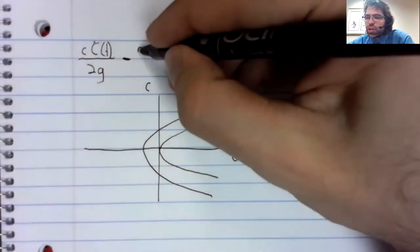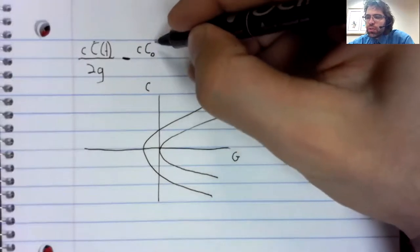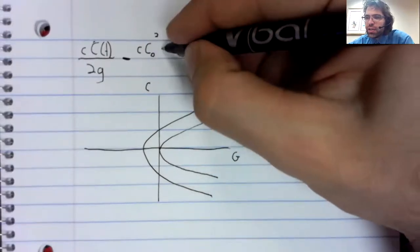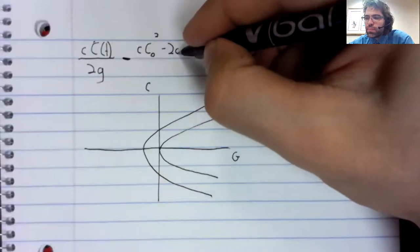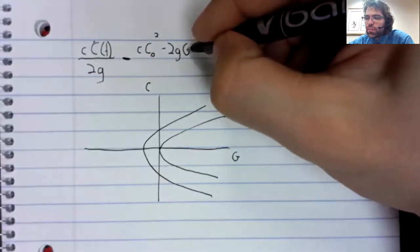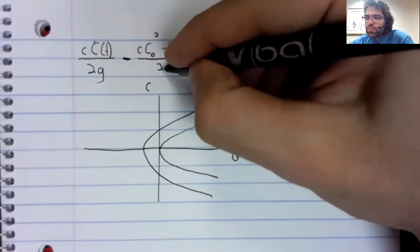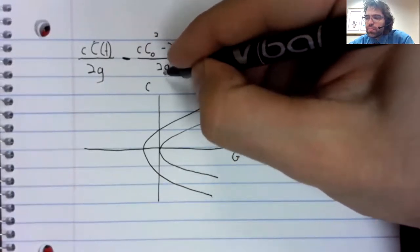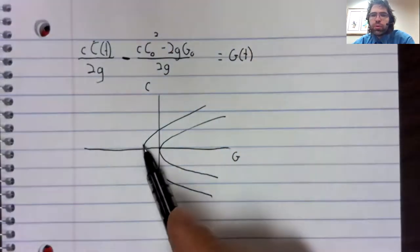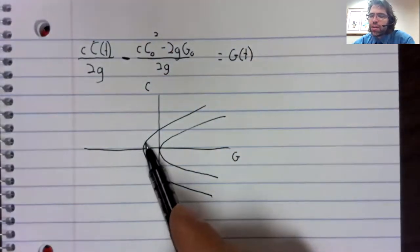So, if this number we are subtracting is positive, the graph will look something like this.